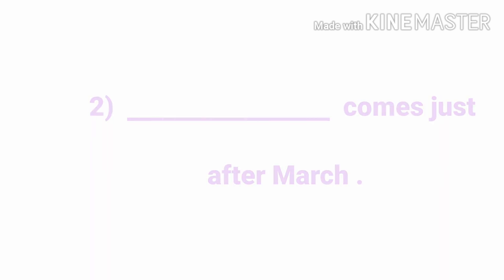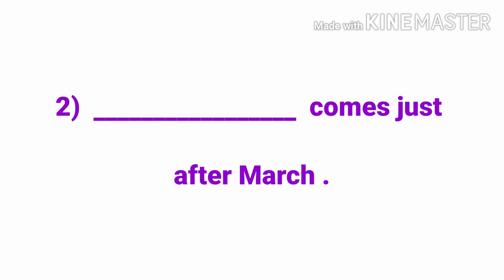Number two: dash comes just after March. You have to write the month that comes after March.